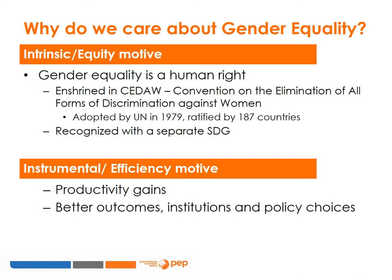Why do we care about gender equality? Gender equality is a human right that is enshrined in CEDAW, the Convention on the Elimination of All Types of Discrimination Against Women. It was adopted by the UN in 1979 and ratified by 187 countries. That gender equality is a human right is recognised by dedicating one of the Sustainable Development Goals to the achievement of gender equality. It is also included in all the other SDGs as it affects all dimensions of development.